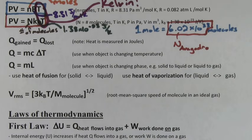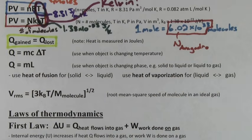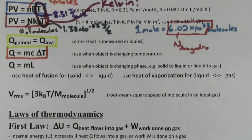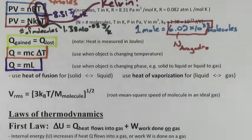When heat is transferred between two objects, you can use the formula Q gained equals Q lost. When the object changes in temperature, you can use Q equals MC delta T. And when the object changes phase, you can use Q equals ML.